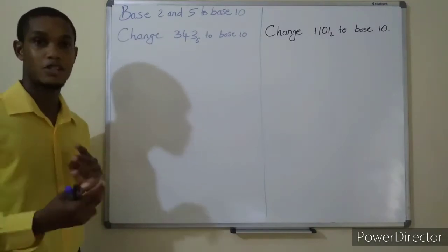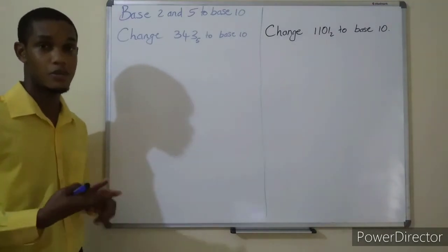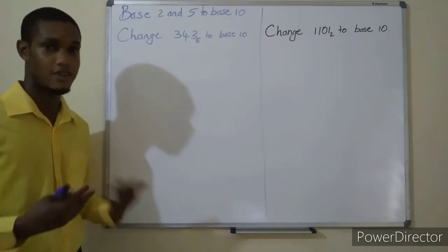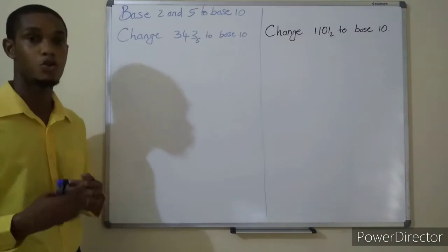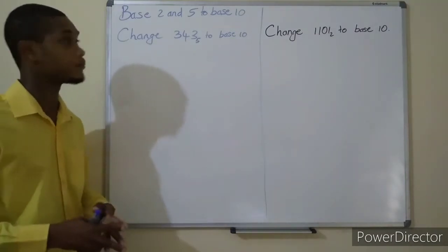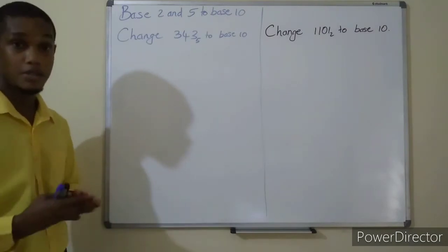When you're dealing with base 2 and 5 and converting to base 10, it doesn't really matter if you're dealing with base 3, 4, 5, 6, 7, 8, or 9. As long as you're changing from one of those bases to base 10, the procedure or process is the same thing. There are four simple steps that you will have to go through, and we are going to be going through those today.